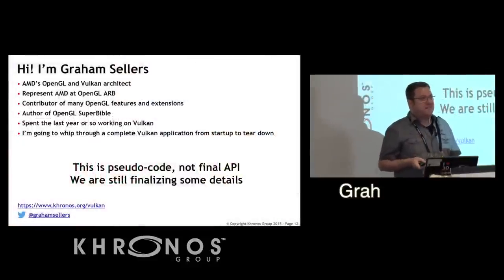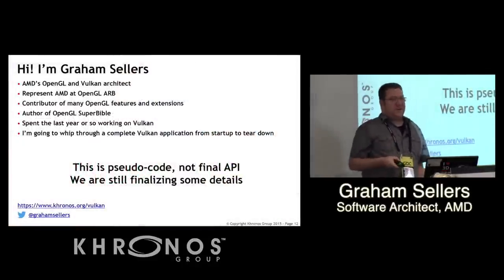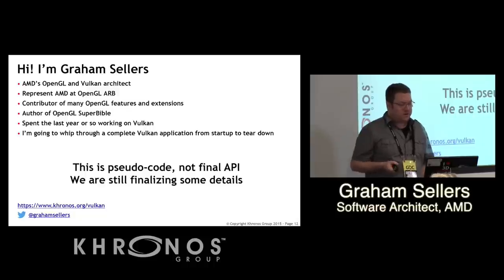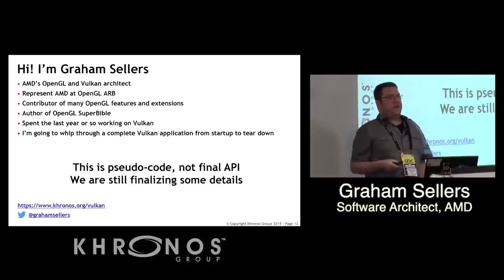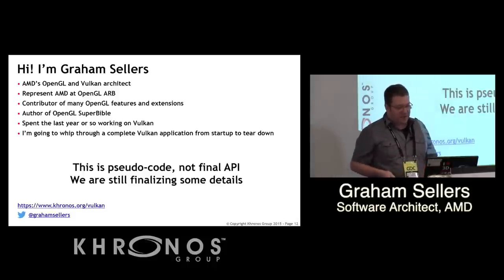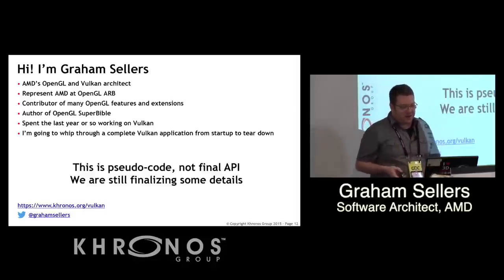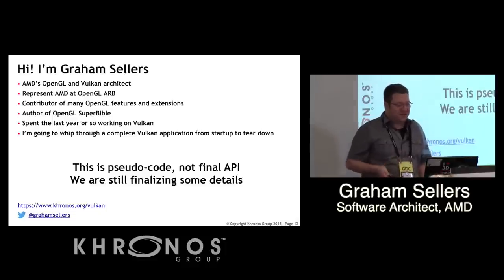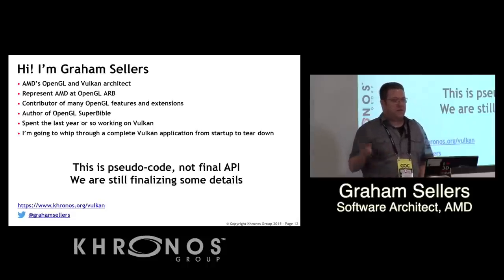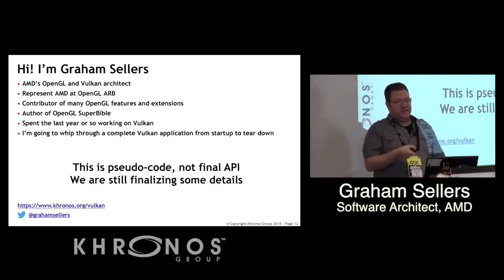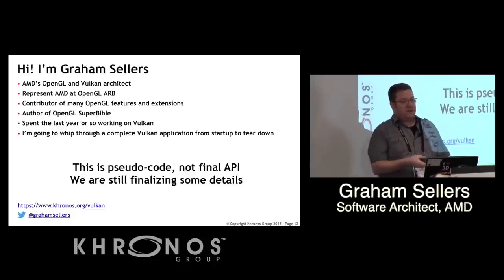I'm Graham Sellers, a software architect at AMD. I work on OpenGL and now Vulkan. I've been representing AMD at OpenGL for quite a while, wrote the OpenGL Super Bible, and for the last year or so I've been spending almost all my time on Vulkan, working with Bill Licea-Kane on spec editing. What I'm going to do is whip through really quickly a complete application from startup to teardown in Vulkan — with a draw call and present — in about 15 minutes. This is pseudocode; there's some obfuscation because we're still finalizing details.